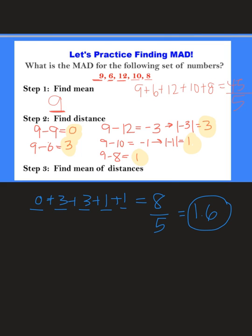So this number, our MAD of 1.6, tells us how much variability the data set has. I would say 1.6 is a pretty small value, so this means the numbers are relatively close together. And if you look at the original data set, I would agree that all of those numbers are pretty close together. Make sure you go ahead and upload a picture of the work you just did with me to the next slide.